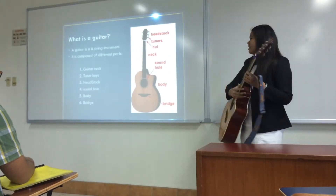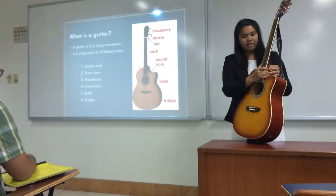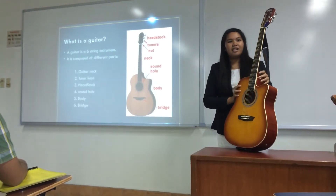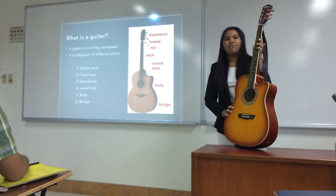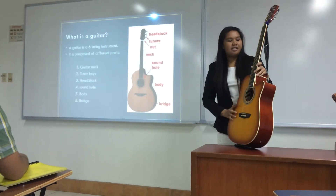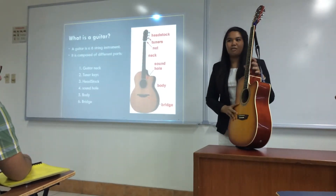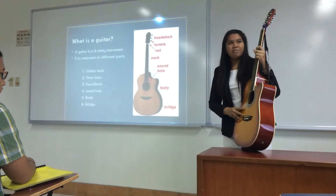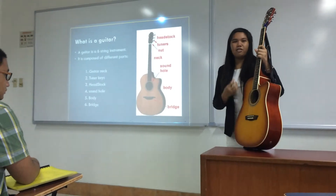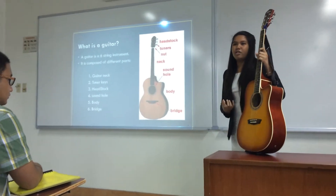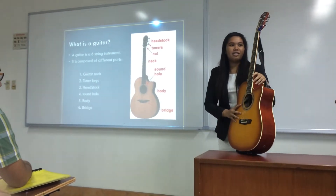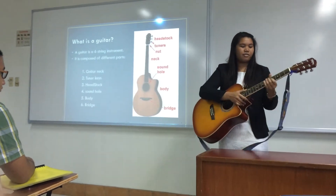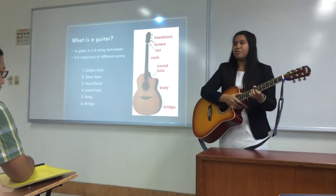First is the guitar neck. The guitar neck is located at the upper part of the guitar and it is composed of frets. The standard number of frets is 21, and some guitars have 19, 20, or 22, but it is still okay because it will just differ in the features they can produce.